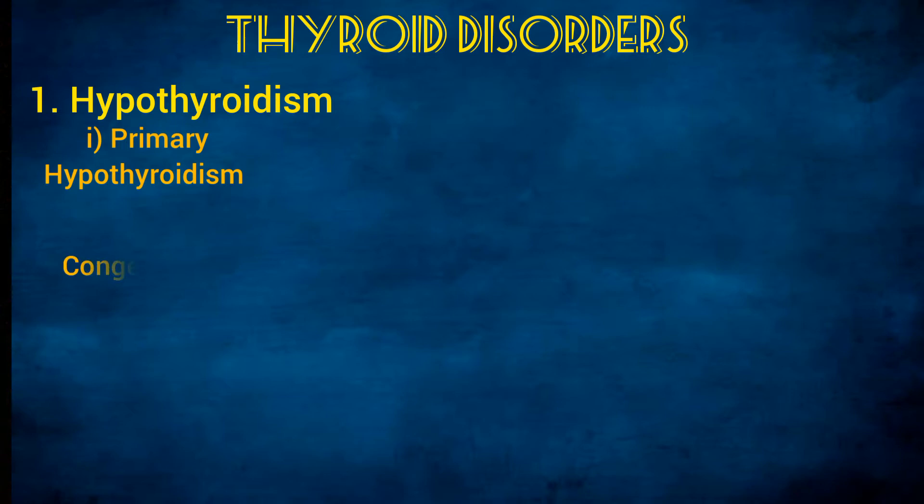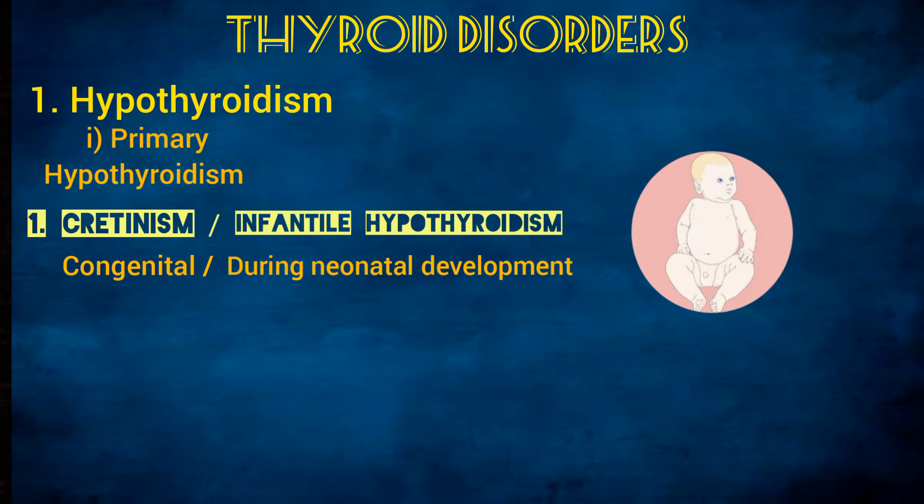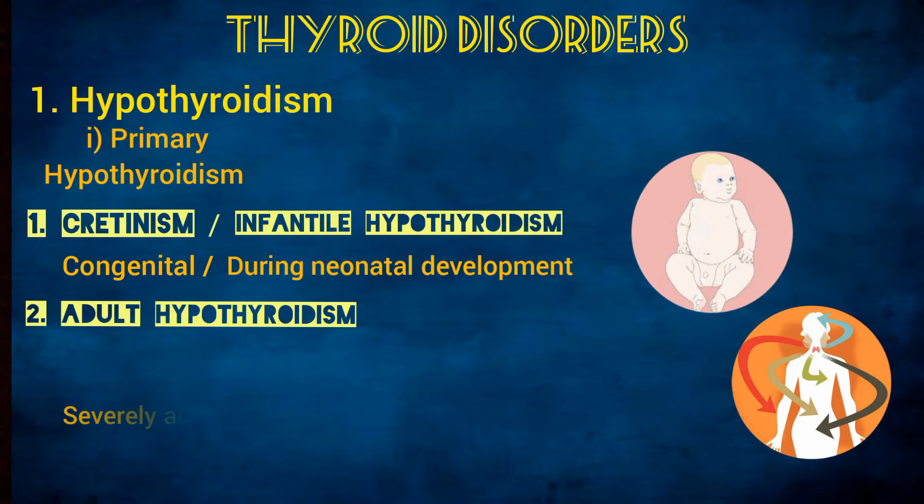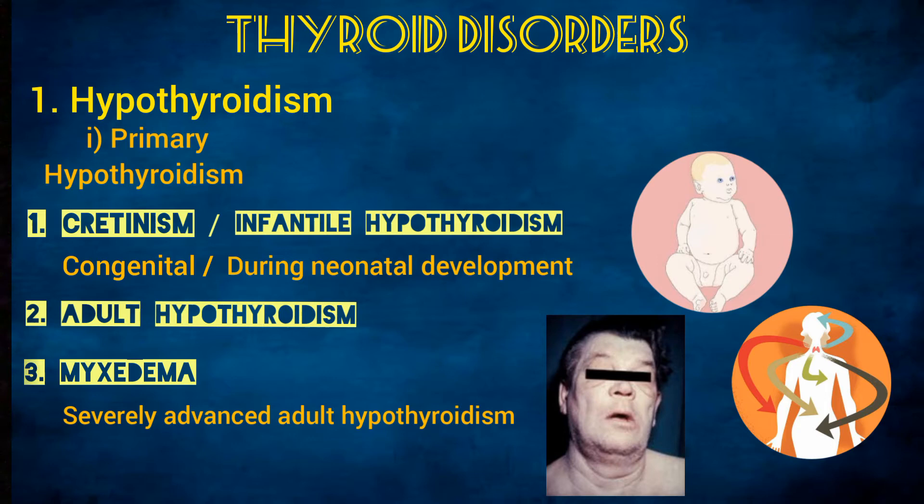When hypothyroidism is congenital or occurs during neonatal development it is known as cretinism or infantile hypothyroidism. The adult variant is called adult hypothyroidism, and when it is severely advanced it is known as myxedema.